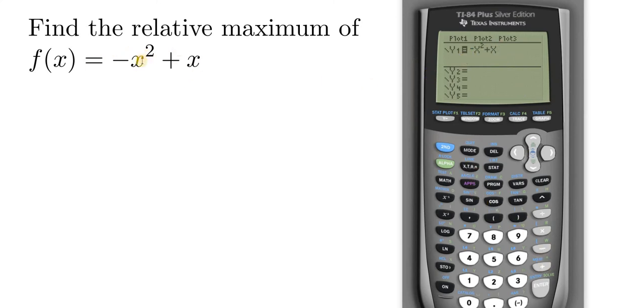So once it's typed in, always double check to make sure everything looks okay. So negative x squared plus x. Yeah, it looks good, so now we're going to hit graph.